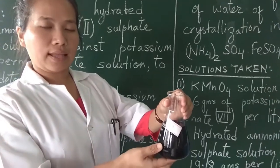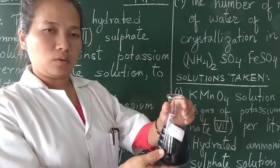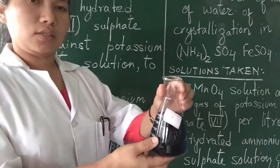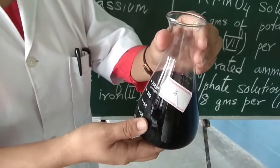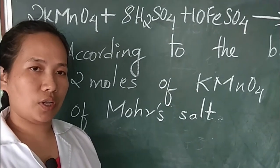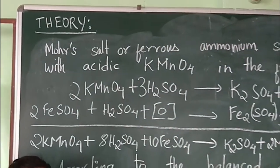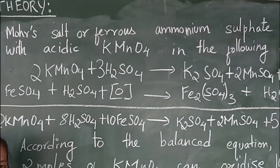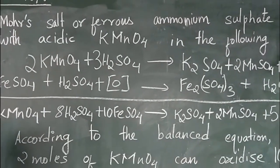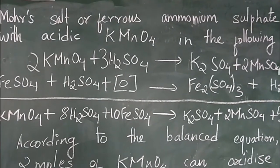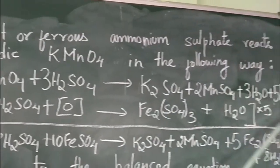Potassium permanganate titration can be done only in acidic medium, but the acid used is only dilute sulfuric acid. Now we will try to understand the oxidizing behavior of KMnO4 in acidic medium. In acidic medium, KMnO4 will give nascent oxygen.